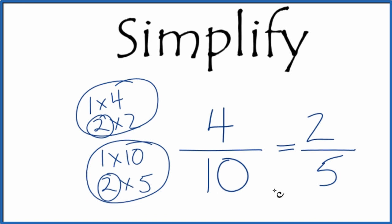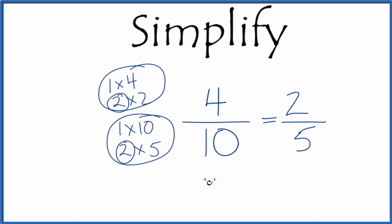And these are equivalent fractions. If you divide 4 by 10, you get 0.4. If you divide 2 by 5, you get 0.4. They're equivalent fractions. It's just that we've reduced or simplified 4 tenths down to 2 fifths.